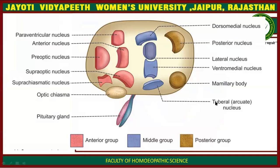In this diagram, the anterior group shown in pink shade includes the supra-chiasmatic nucleus, supra-optic nucleus, pre-optic nucleus, anterior nucleus, and paraventricular nucleus. The middle group includes the dorsomedial nucleus, lateral nucleus, ventromedial nucleus, and tuberal arcuate nucleus. In the posterior group there are two nuclei: the posterior nucleus and the mammillary body.